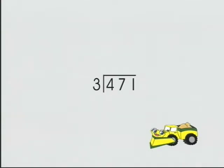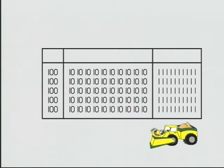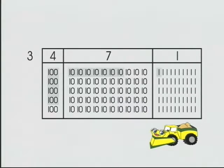471 divided by 3 using the division worksheet. The division worksheet is a connecting level activity between our manipulatives and the paper-pencil algorithm for division. Our problem: 471 divided by 3. We have 4 hundreds, 7 tens, 1 one. Our divisor tells us we're making groups of 3.